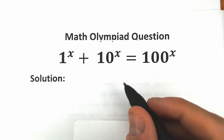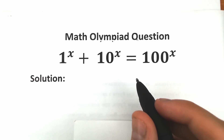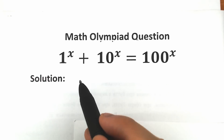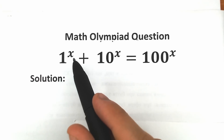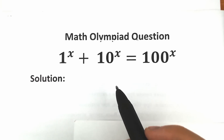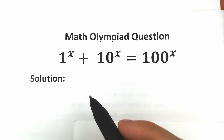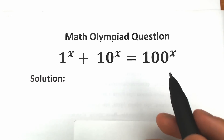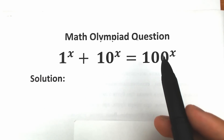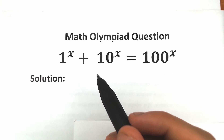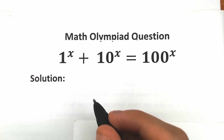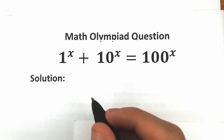Hello everyone, happy to see you here. Welcome back to my channel Higher Mathematics. Today we are going to solve this really interesting exponential equation: 1 to the power x plus 10 to the power x equal to 100 to the power x. A lot of students are confused about this challenge — they don't know how to solve it because we have all different bases, and it turns into a big argument. In this video I'm going to fully explain how to do this correctly, step by step.